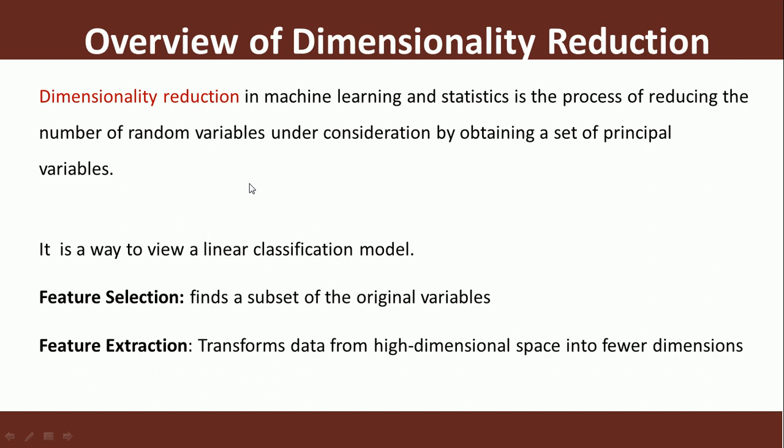Now what is dimensionality reduction? Dimensionality reduction is the process of reducing the number of random variables under consideration by obtaining a set of principal values or principal components. It's a way to view a linear classification model. Dimensionality reduction can either be feature selection or feature extraction.